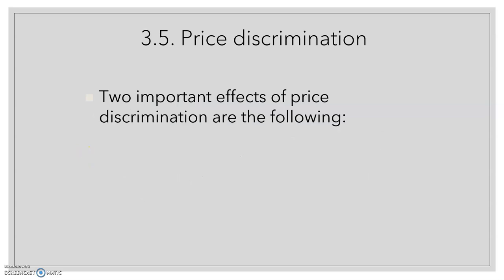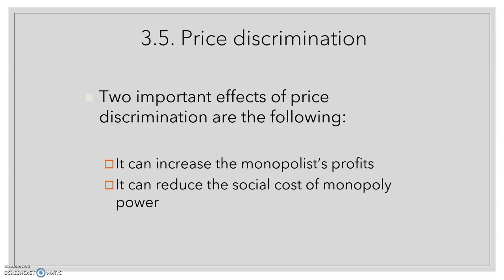There are two important effects of price discrimination. The first is that it can increase the monopolist's profits, as the monopolist is capturing part of the consumer surplus. The second is that it can reduce the social cost of monopoly power — the deadweight loss of minus B minus C that we calculated in the last video. If you don't remember, just check video number 4.